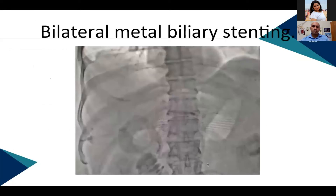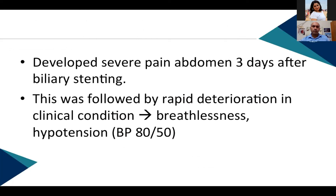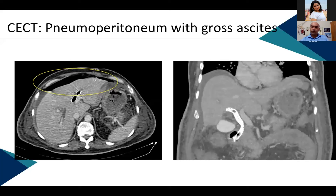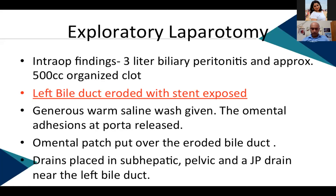Once the infection settled, bilateral metal biliary stenting was done and IV antibiotics were continued. The patient was improving clinically until three days after stenting, when he developed sudden abdominal pain at night. This was followed by rapid deterioration of clinical condition, with severe dyspnea and dropping blood pressure. An emergency contrast CT revealed significant pneumoperitoneum with air-containing collection near the biliary stents. The patient was immediately taken for exploratory laparotomy.